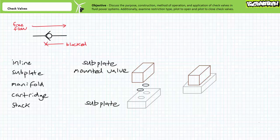A technician will lock out and tag out the system, remove a couple screws, pop off the old valve, pop on a new one, tighten a couple screws, and return the system to service all without causing more problems. The old subplate mounted valve can be repaired or rebuilt and returned to stock.